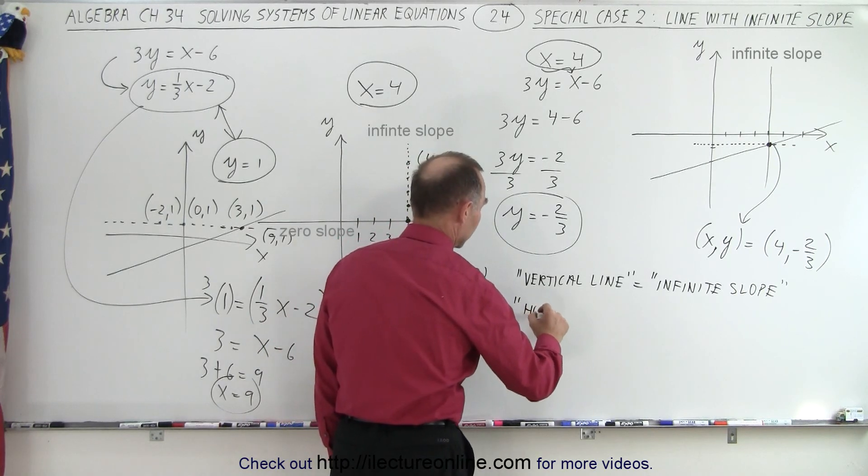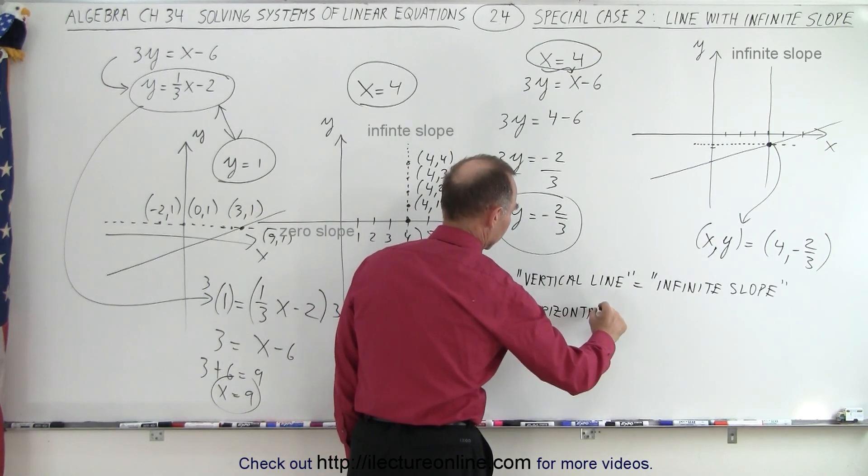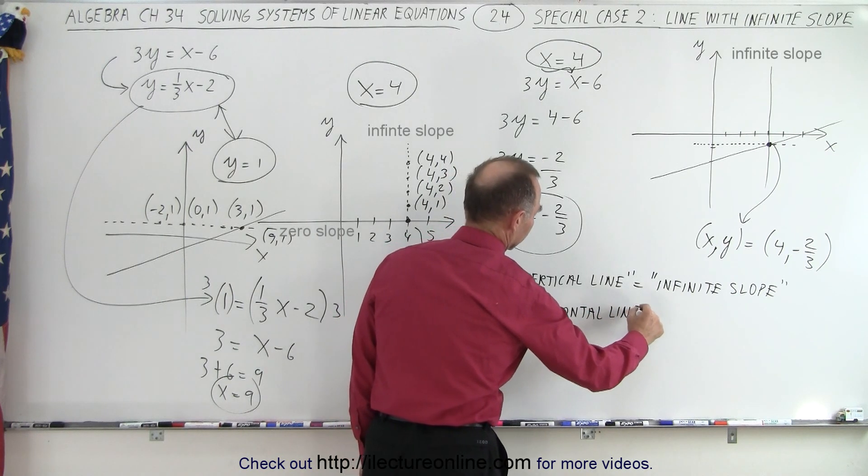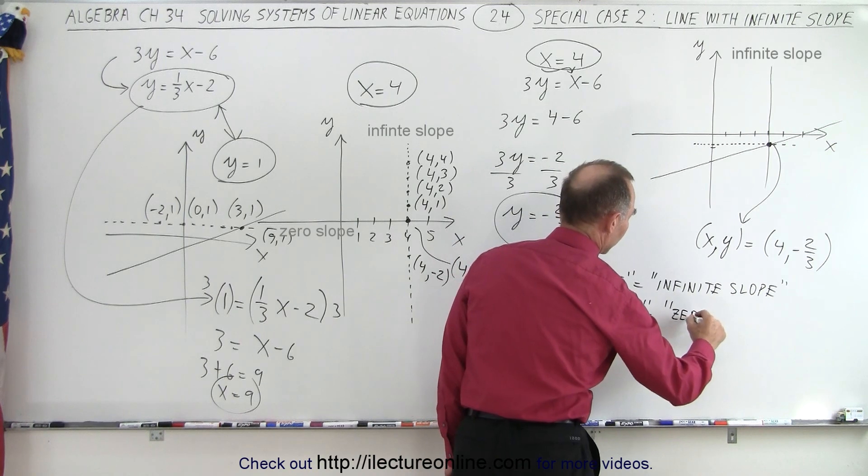That's right. So a horizontal line, what slope is equal to zero? Is equal to zero slope. It's synonymous to zero slope.